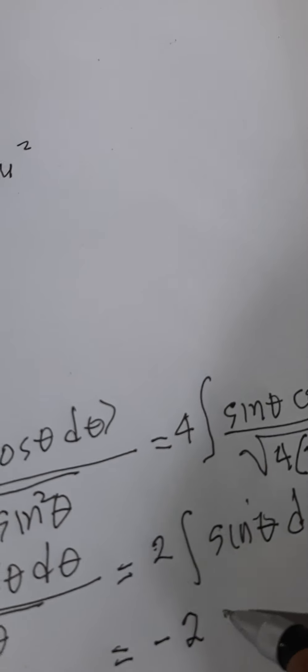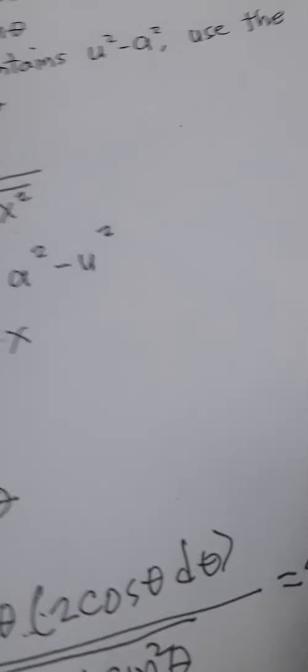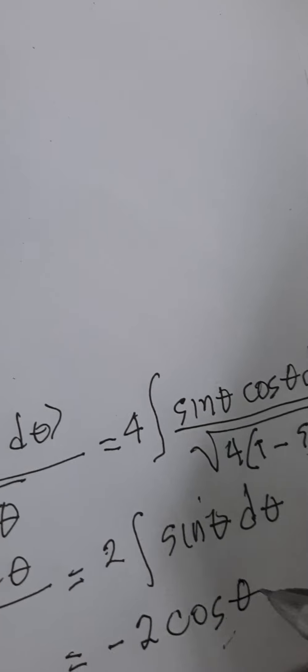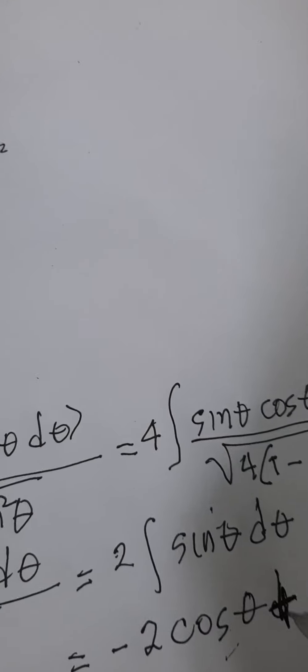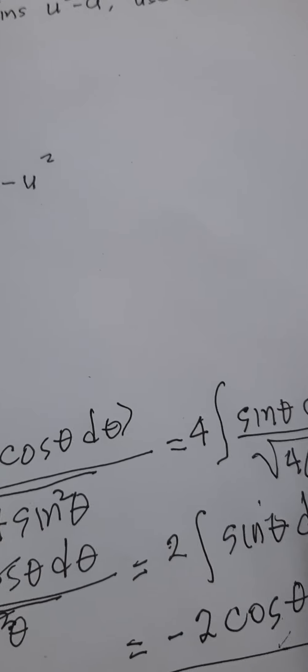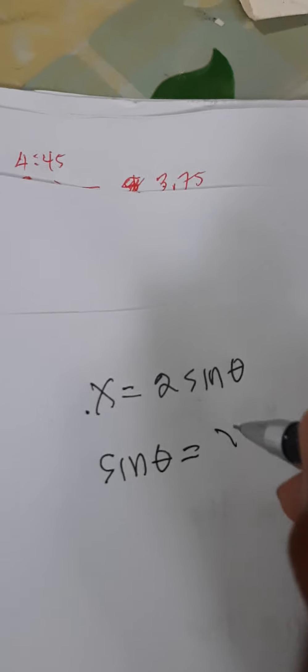We have the integration formula for this, which gives us negative 2 cosine theta plus C. But the solution does not end there because we need to return to the original variable X. From the substitution we used, X equals 2 sin theta, we can see that sin theta equals X over 2. We need to draw a triangle from the given substitution.